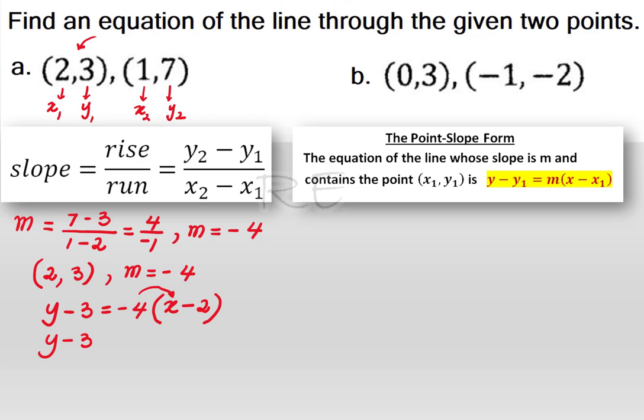y minus 3 is equal to, when we distribute, negative 4x. Negative 4 times negative 2 is positive 8, plus 8. And when we add 3 to both sides, we'll get an equation for that line, which is y is equal to negative 4x plus 11.